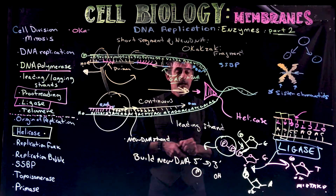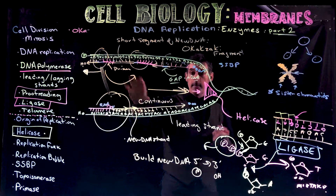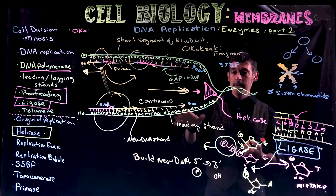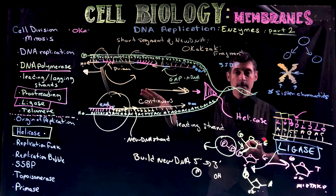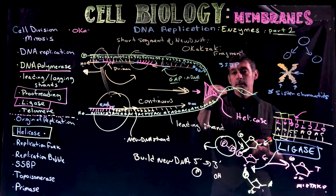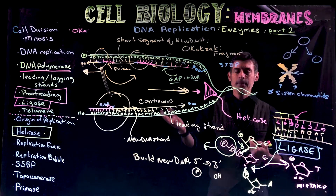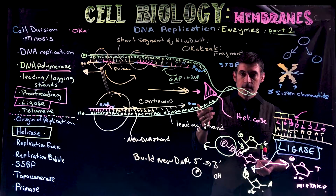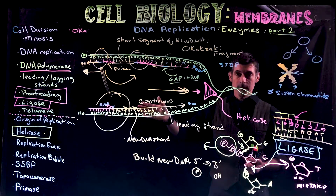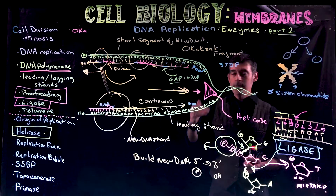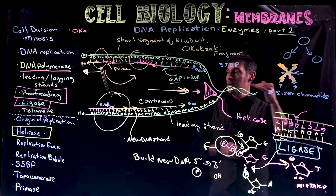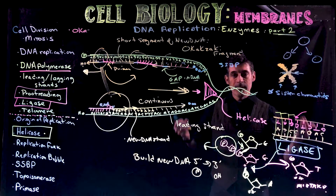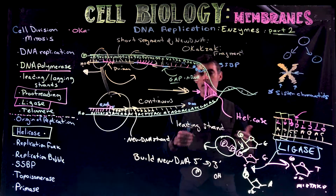Make sure you can draw a replication fork, sketch the different enzymes and proteins associated with it, label where they fit in the process, and list them in order. Helicase has to come in first to break strands apart. You have to have primase come in to make primers before DNA polymerase can work. The order in which these enzymes and proteins operate is very important. If you know what they are, where they go, and in what order they work, you have a good handle on an overview of DNA replication.